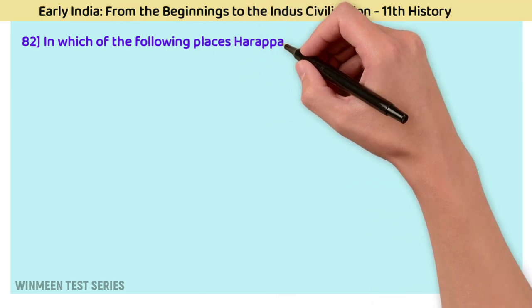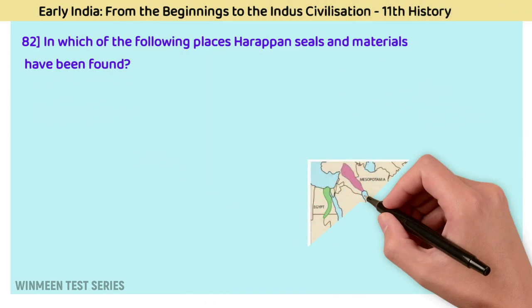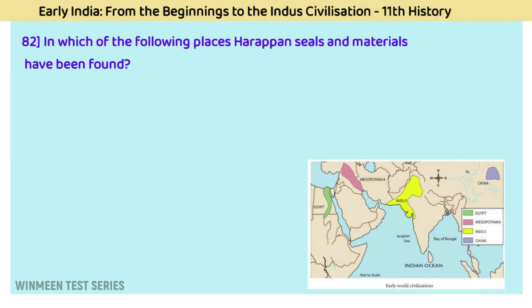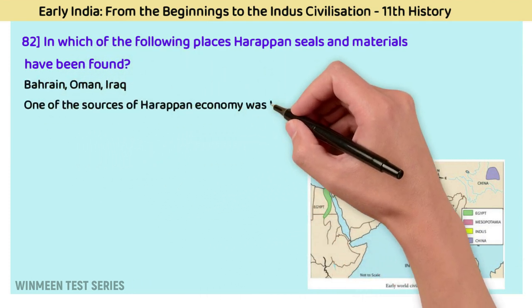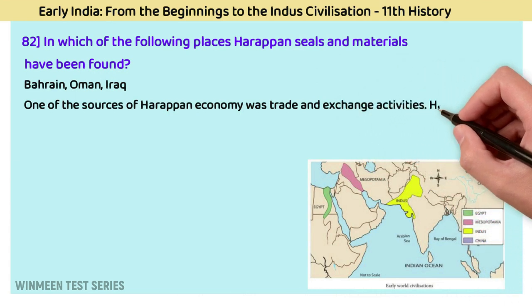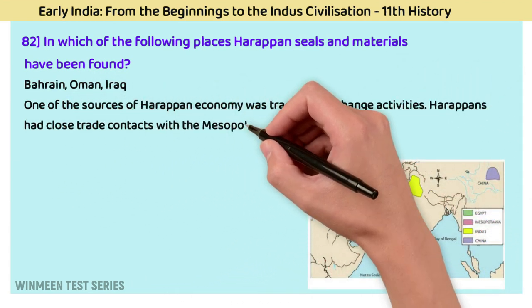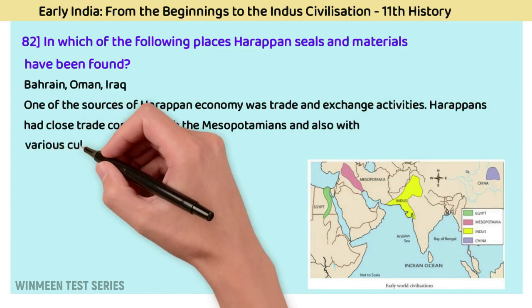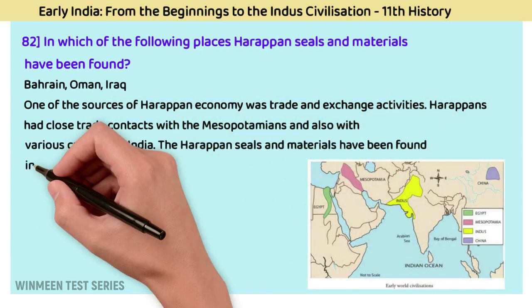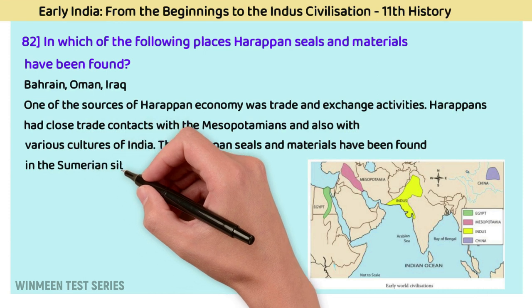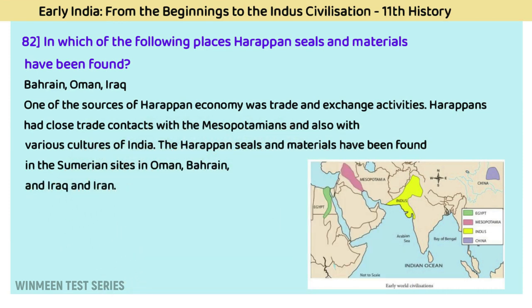Question 82: In which places have Harappan seals and materials been found? The answer is Bahrain, Oman, and Iraq. One of the sources of Harappan economy was trade and exchange activities. Harappans had close trade contacts with Mesopotamia and various other cultures of India. These Harappan seals and materials have been found in Sumerian sites in Oman, Bahrain, Iraq, and Iran.